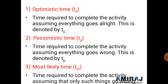Pessimistic time (tp) is the time required to complete the activity assuming everything goes wrong. For example, if excavation was planned for three days but takes five or seven days, that is the pessimistic time. It is denoted by tp, where 'p' means pessimistic and 't' means time.